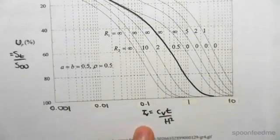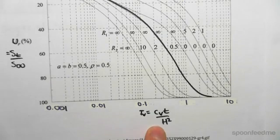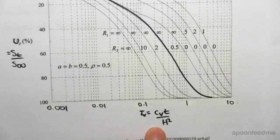Now, this axis is something called dimensionless time, where we have Cv, which we're going to define in a second, T which is time, and H which is not the layer thickness but the drainage path we discussed in the previous video.